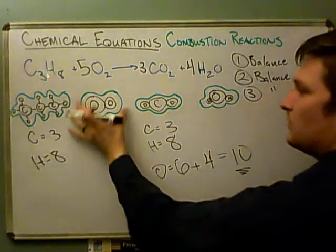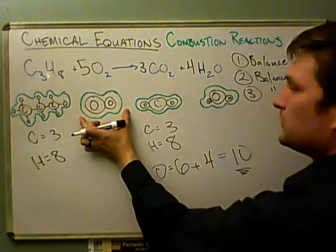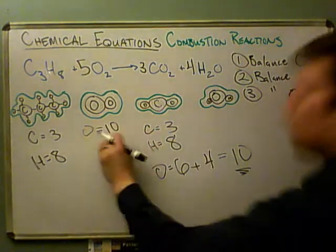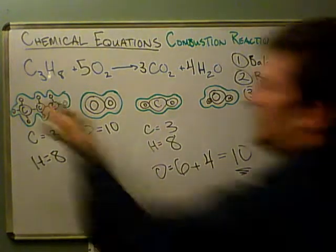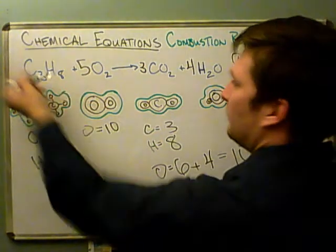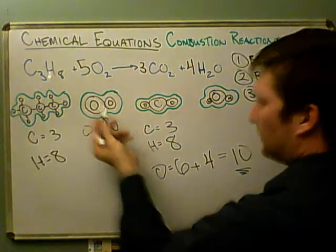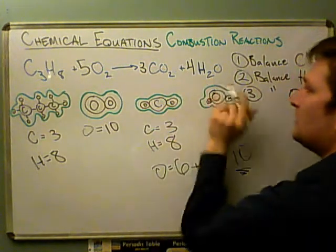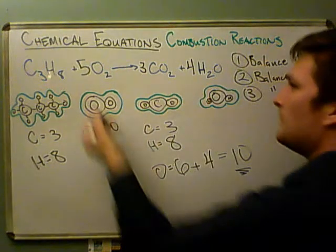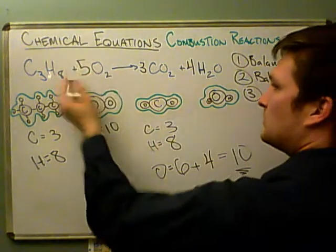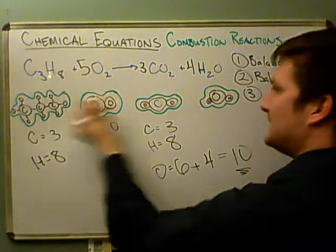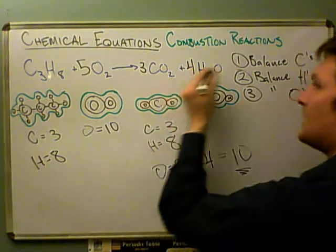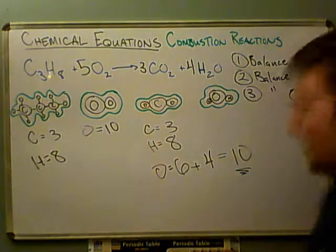Let's double-check: if we have five molecules of O2, each with two oxygens, that's ten total. How many carbons? Three on the left, three on the right — balanced. How many hydrogens? Eight on the left; four times two is eight on the right — balanced. How many oxygens? Two times five is ten on the left; two times three plus four times one is ten on the right — balanced. So the equation is balanced.